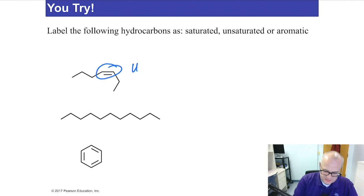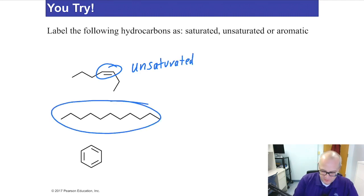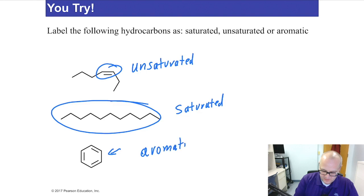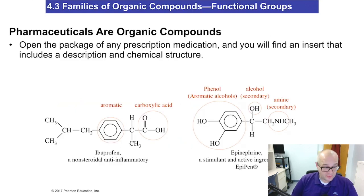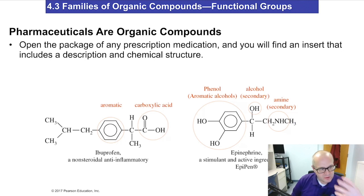There's a double bond — that's unsaturated. This one doesn't have any double bonds, just single bonds — that is saturated. And this thing is a six-membered ring with alternating double bonds — that is benzene, and that's aromatic. After memorizing all the families of compounds, picking out unsaturated from saturated was pretty easy.